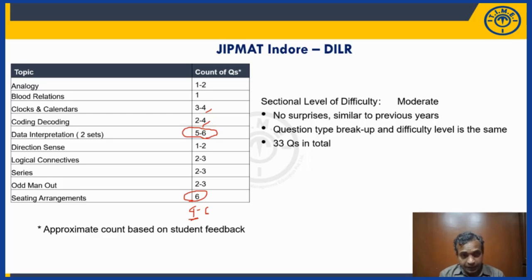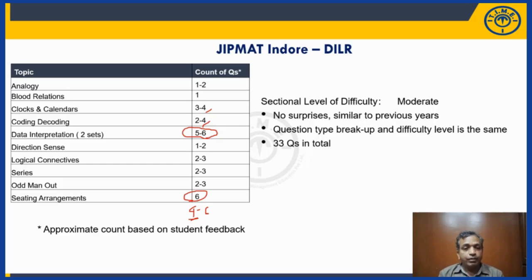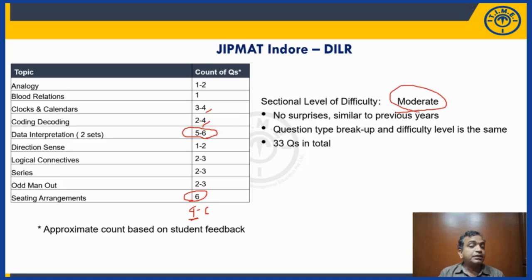Students who focused on all LR areas, including smaller topics like blood relations and directions, would have been well-positioned to maximize their score. The key is being comfortable with the basics across all areas so that you can at least attempt every question. Given the moderate difficulty level, there are no unsolvable questions, and with around 150 minutes for 100 questions, time pressure is not extreme. Overall, the DILR section was moderate with no surprises compared to last year.